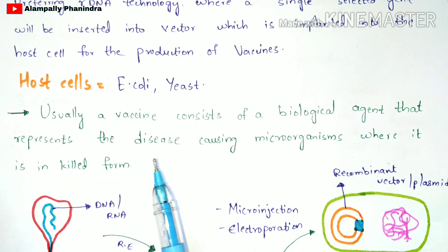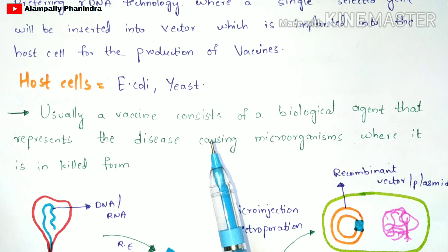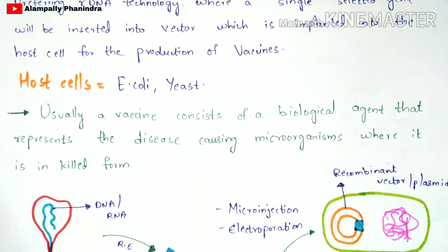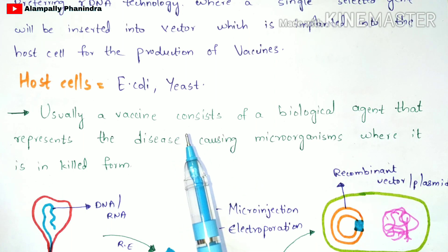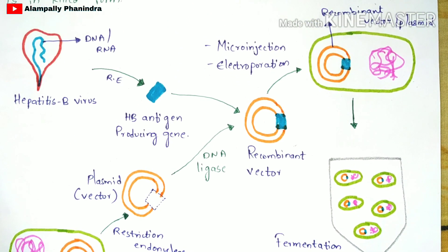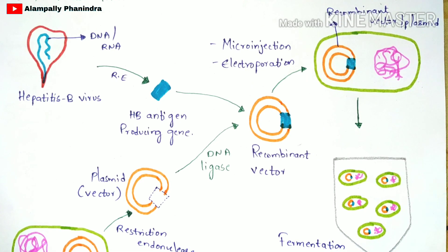One important definition to remember: a vaccine consists of a biological agent that represents the disease-causing microorganisms. I will explain this sentence at the end of the video, because first you need to understand the protocol of the production of these vaccines, and then you can understand this definition by yourself.